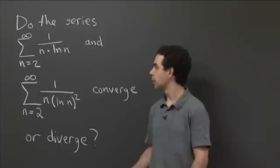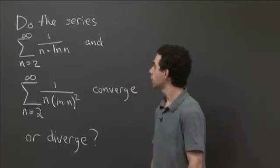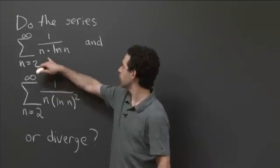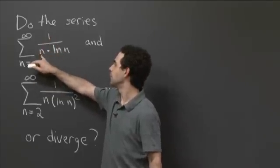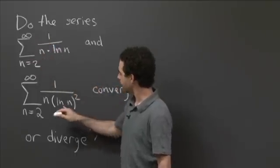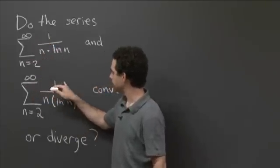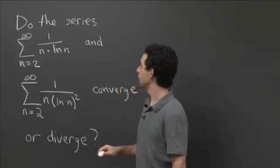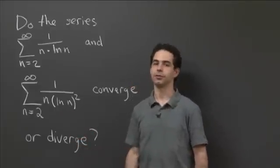So here are a couple of series that you haven't seen before. The sum from n equals 2 to infinity, just so I don't have any funny business of dividing by 0, of 1 over n times log of n, and a second series, sum from n equals 2 to infinity of 1 over n times log of n quantity squared. So the question is, do these series converge or diverge?